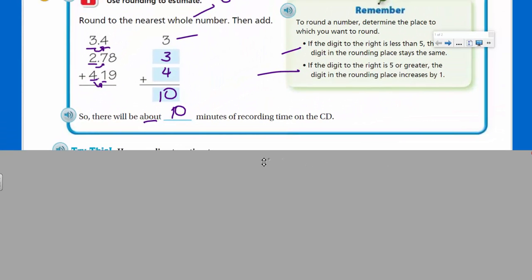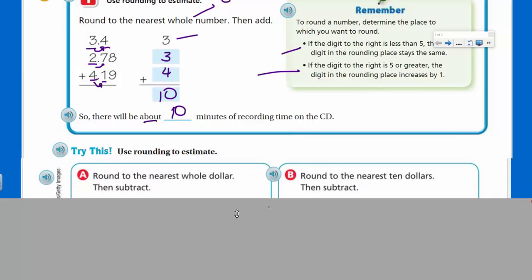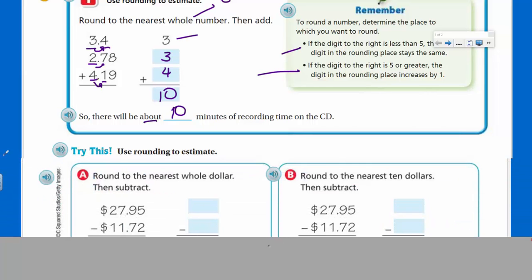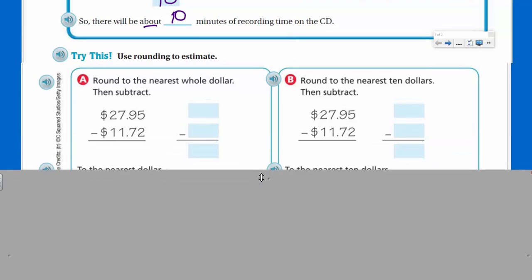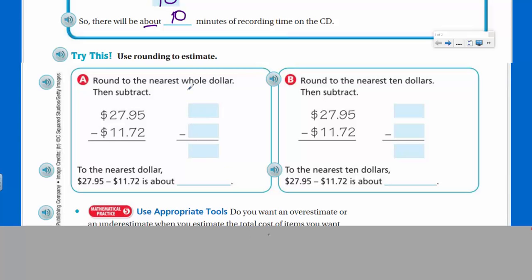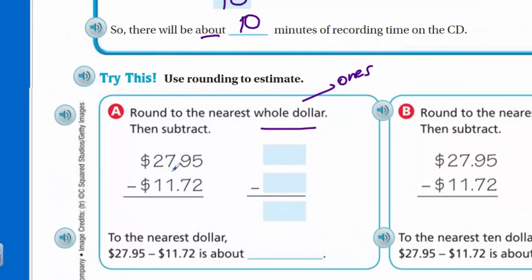There's a different time and place when we want to estimate a particular sum or difference, and other times that we don't. Let's take a look at what we have here. Try this: use rounding to estimate. Round to the nearest whole dollar. Again, whole dollar refers to that one's place. Whenever we think of the whole number, whole dollar, we're looking right here. Then subtract. I'm looking at this and you can see that the nine is five or more, so we're going to up the score. We're going to up that to $28.